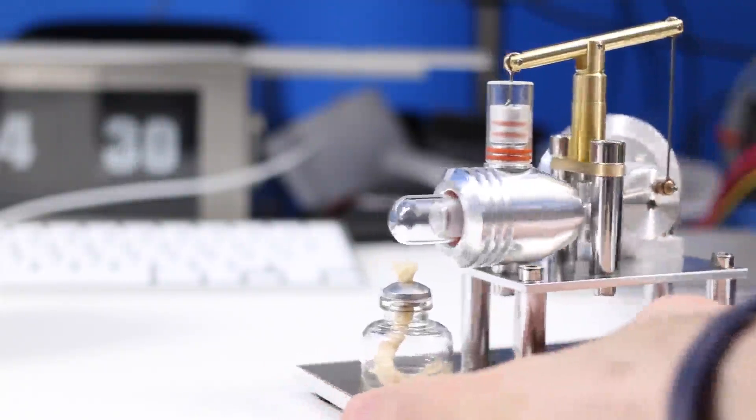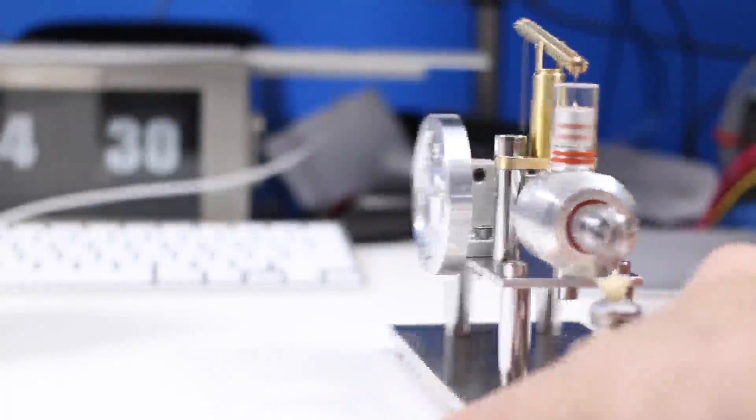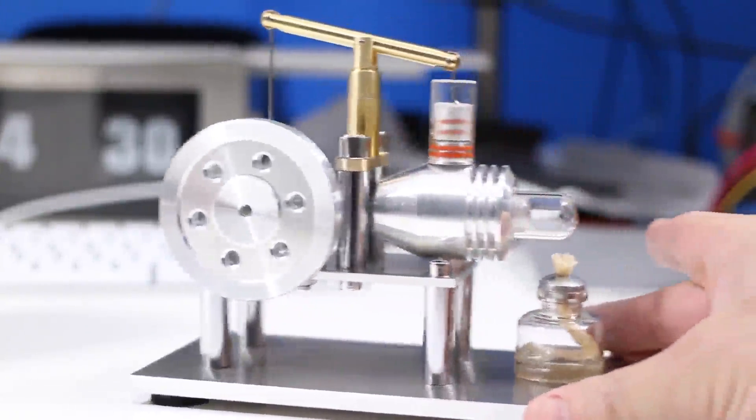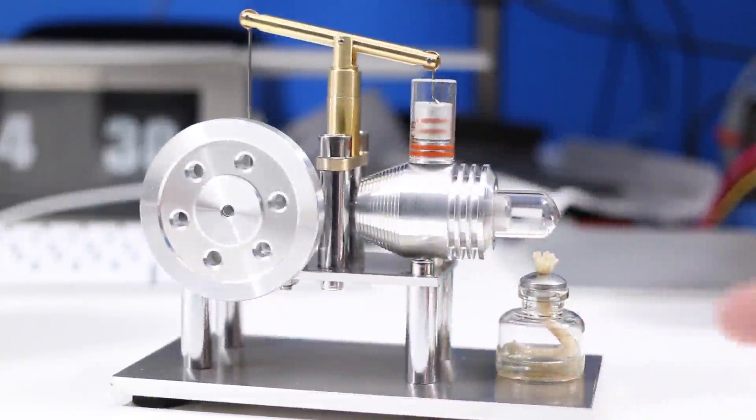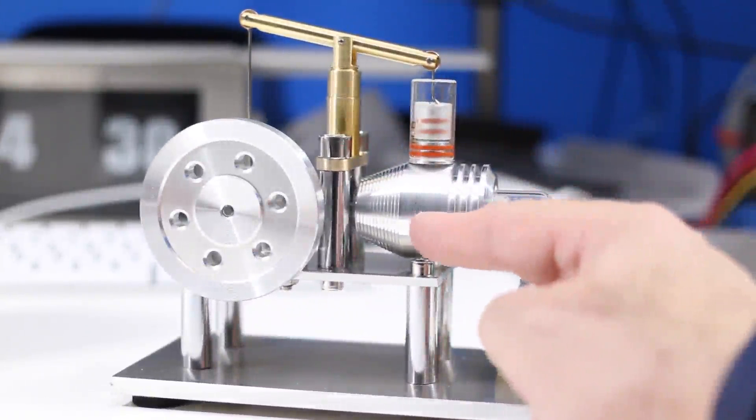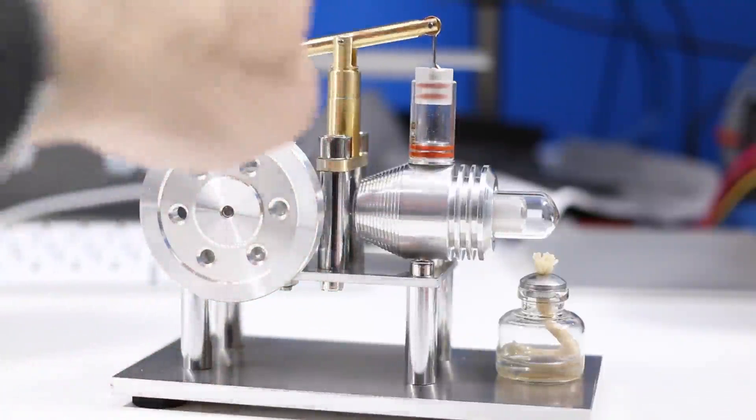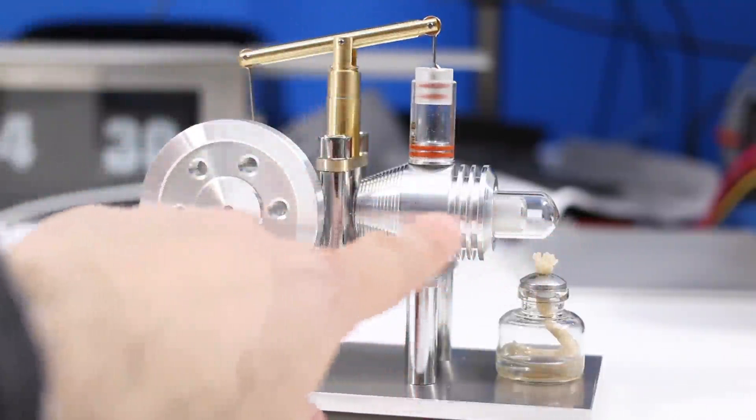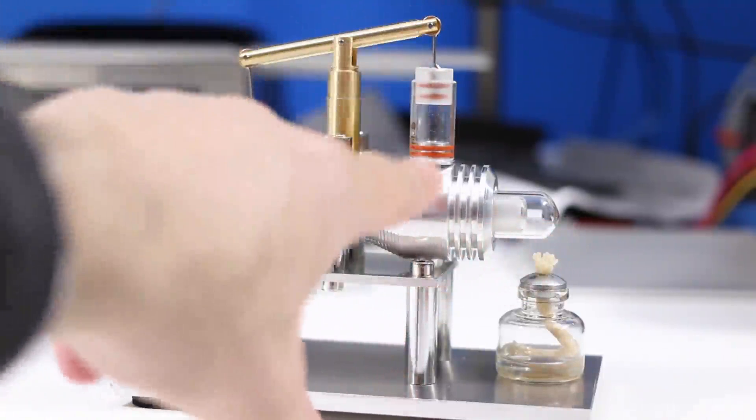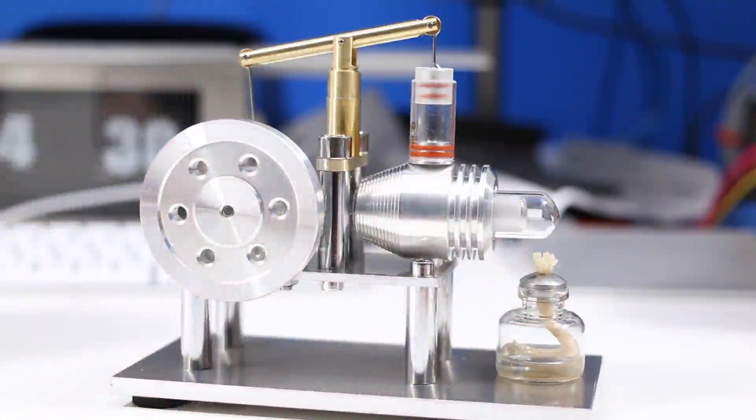The way a Sterling engine works is it has opposing sides of hot and then cold going through a cylinder. So we have over here the hot cylinder and you can see there's the cold cylinder. When the flywheel pushes this back and forth, it exchanges the hot air for cold air and pushes cold air back in, and that completes the cycle.